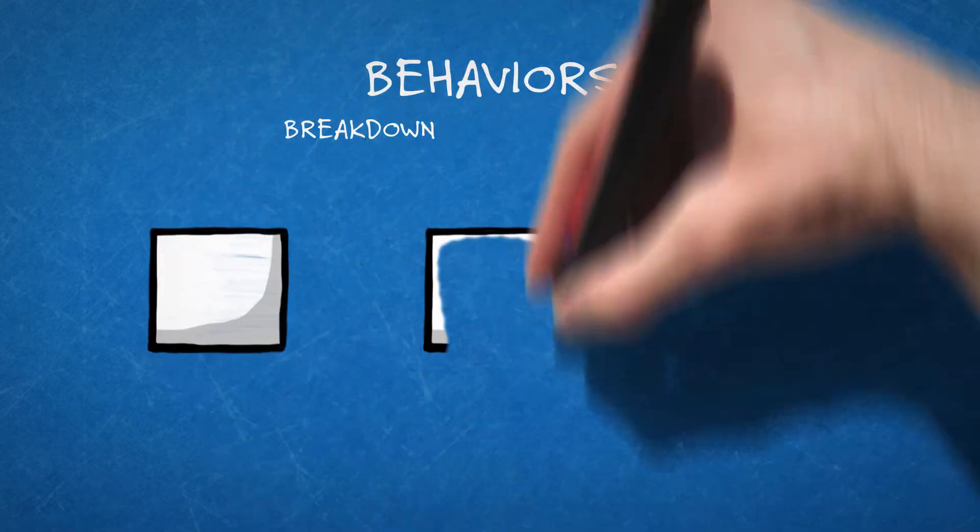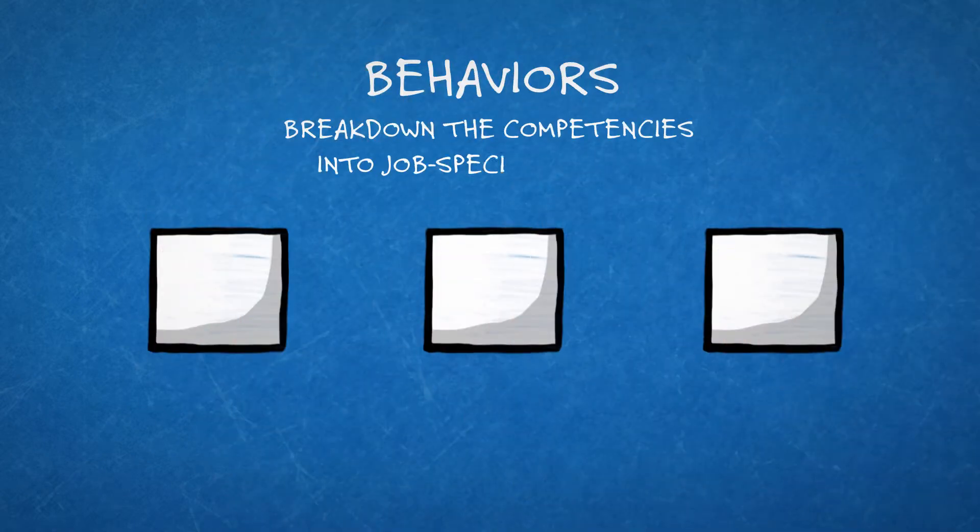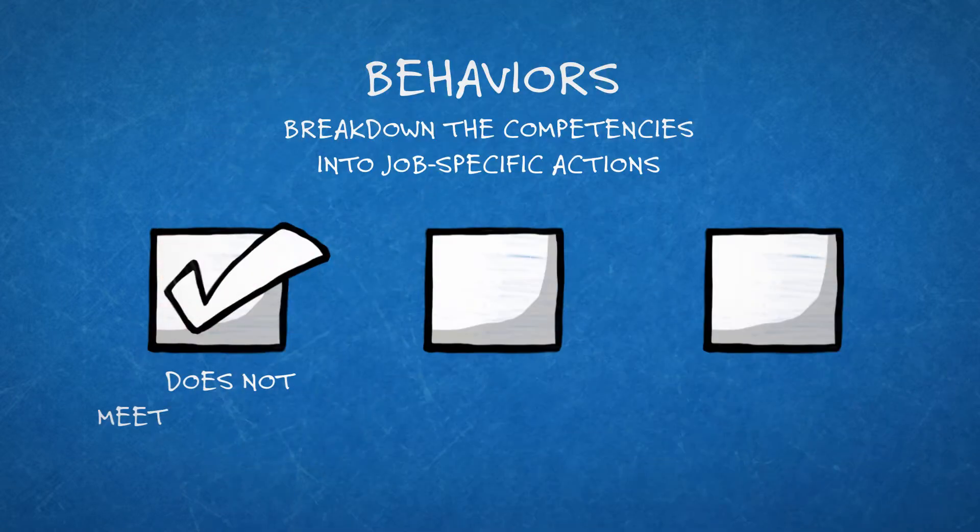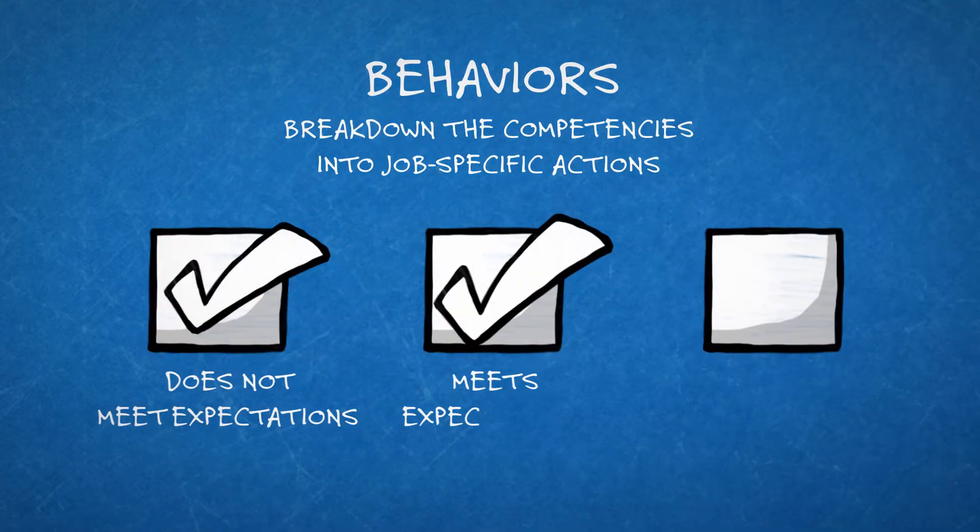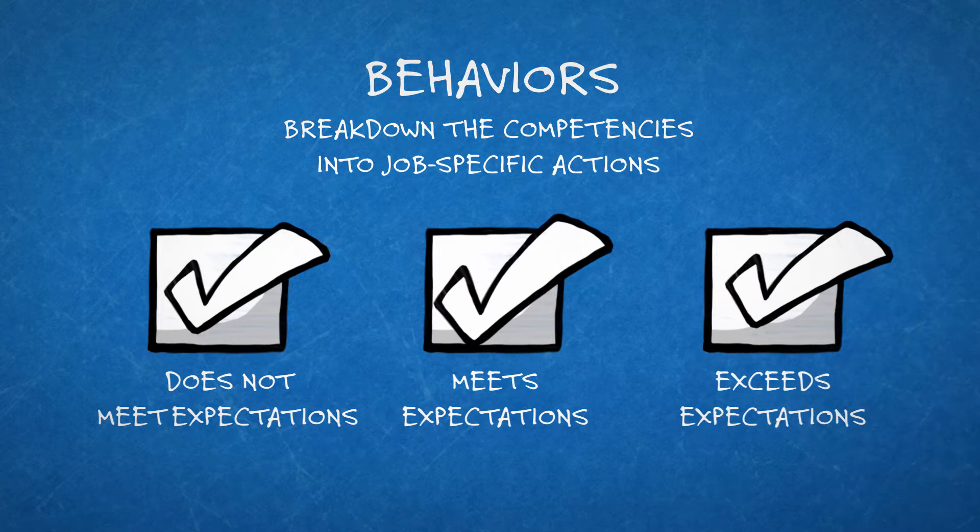Behaviors break down the competencies into job-specific actions. These include descriptions of does not meet expectations, meets expectations, and exceeds expectations. They also provide measurable, observable ways to define success.